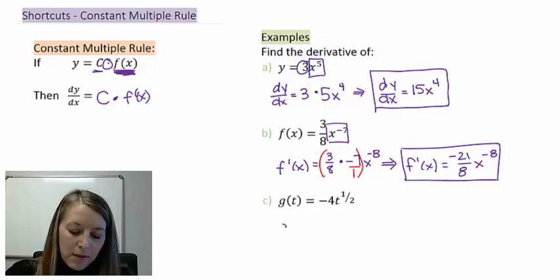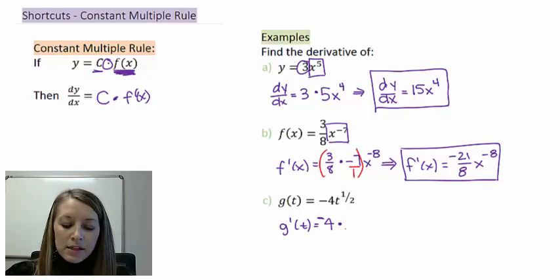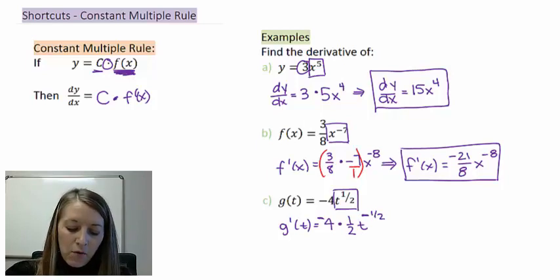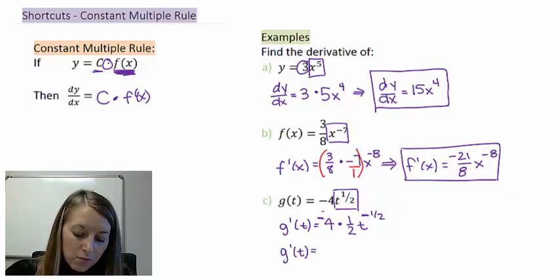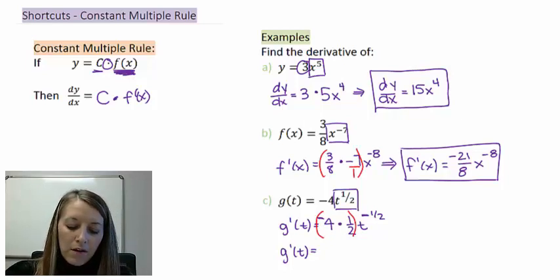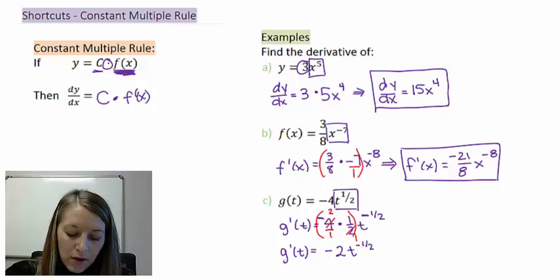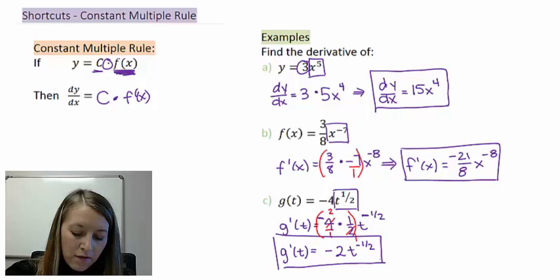In part C, g prime of t: we take our constant of negative 4 and hold it out front — it doesn't matter that it's negative — then take the derivative of t to the one-half using the power rule. Bring the power down: one-half minus 1 gives negative one-half. Simplifying: negative 4 times one-half reduces to negative 2, so g prime of t equals negative 2 times t to the negative one-half.